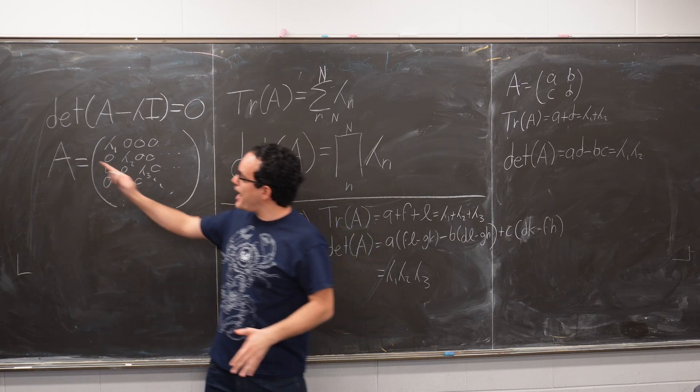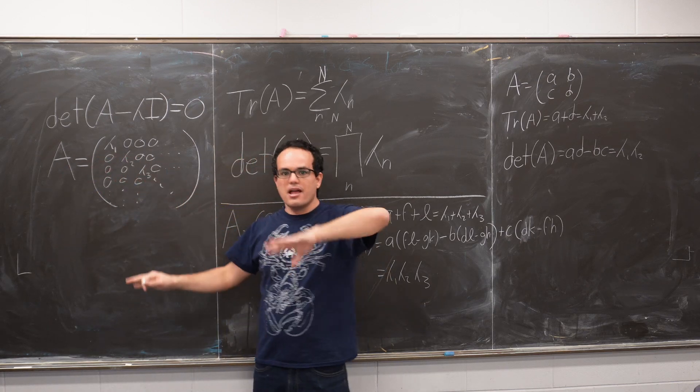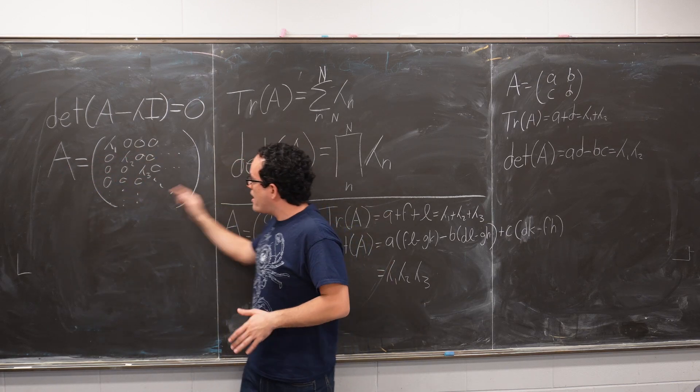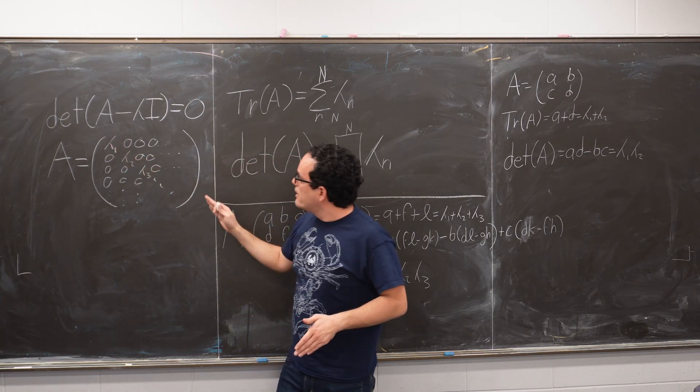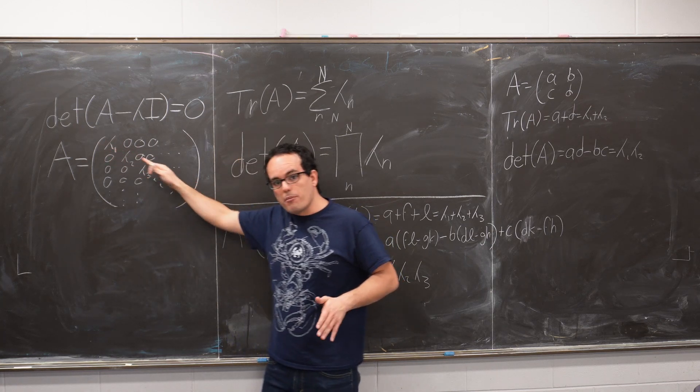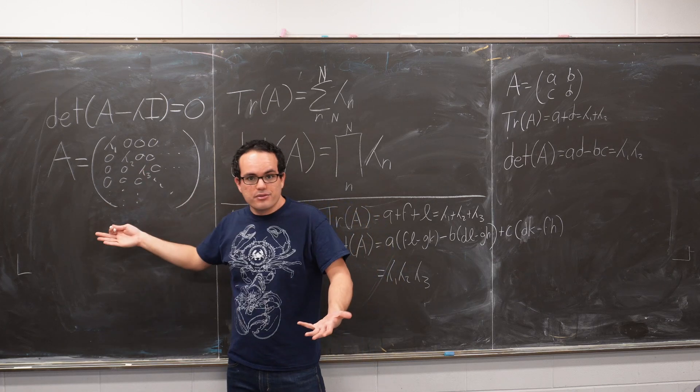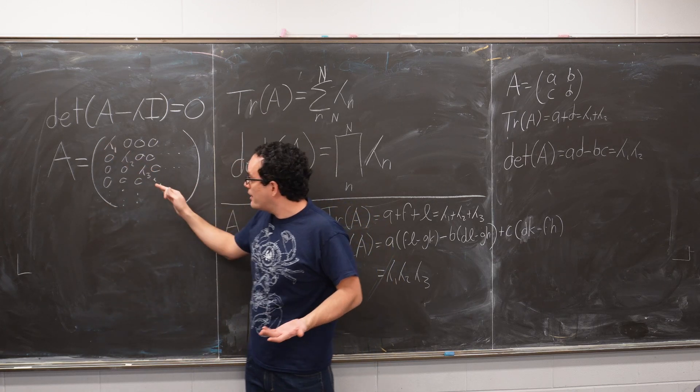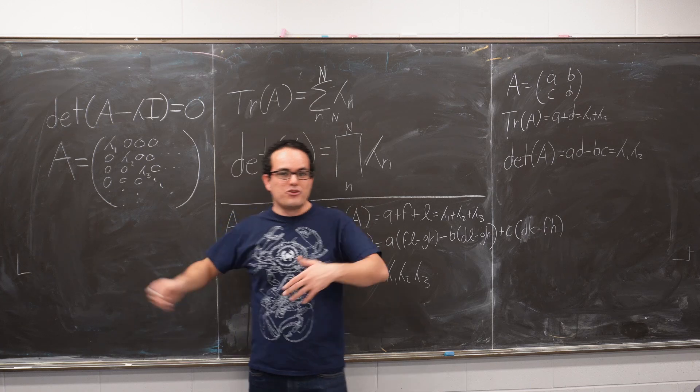The first is that if you have a diagonal matrix, that is a matrix that has zeros everywhere except in the left to right diagonal, then all of these numbers are actually the eigenvalues. So if your matrix was diagonal like this, you wouldn't be watching this video, you'd be done already.